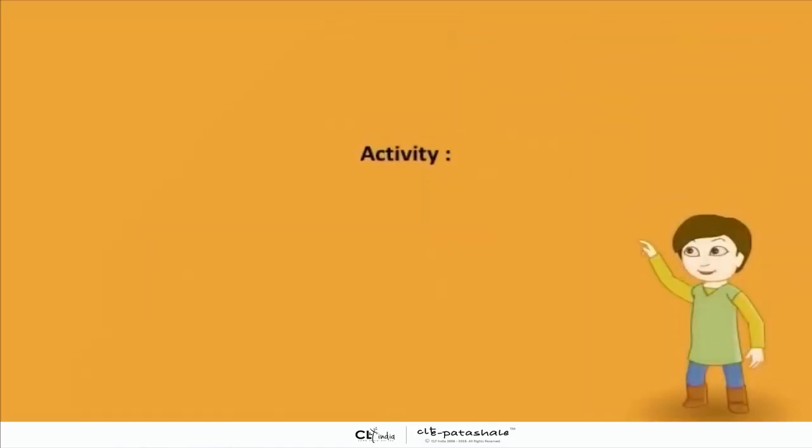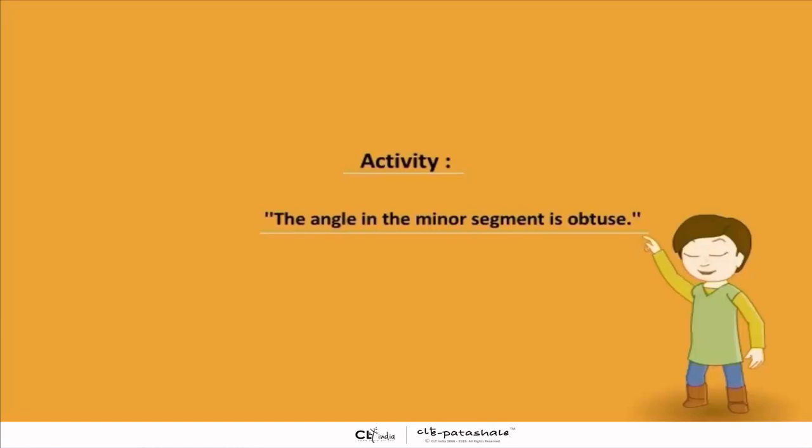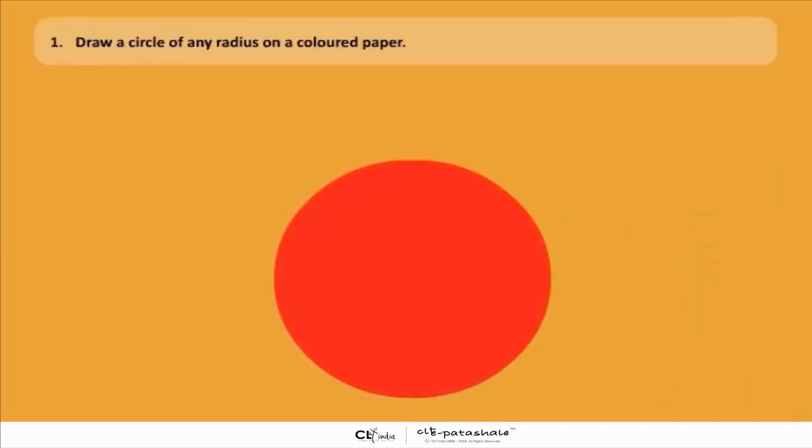Now children, let's do an activity which will prove that the angle in the minor segment is obtuse. Draw a circle of any radius on a colored paper.